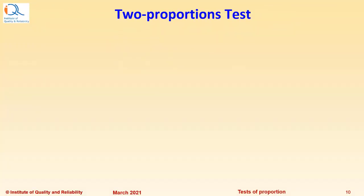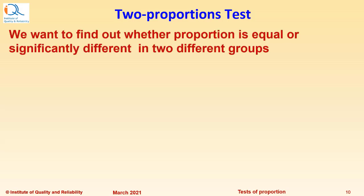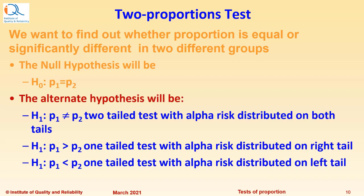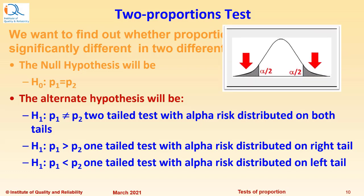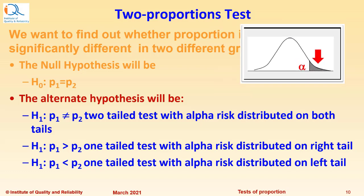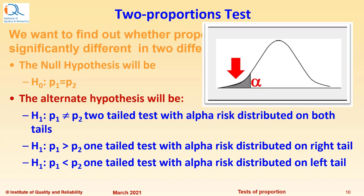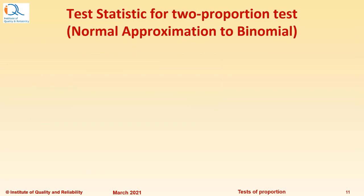Let us now see two proportion test. We want to find out whether proportion is equal or significantly different in two different groups. The null hypothesis will be both proportions are equal, that is p1 equals p2. The alternate hypothesis can be p1 not equal to p2, or p1 greater than p2, or p1 less than p2. For the inequality, it will be alpha risk distributed on both tails. For p1 greater than p2, it will be alpha risk distributed on right tail. For p1 less than p2, alpha risk will be distributed on left tail.